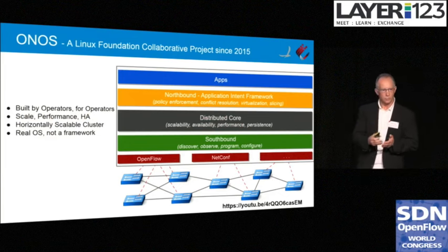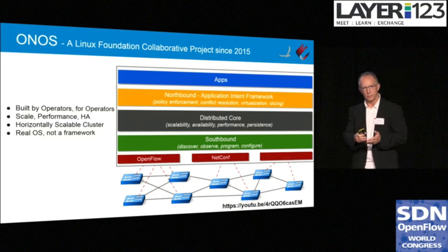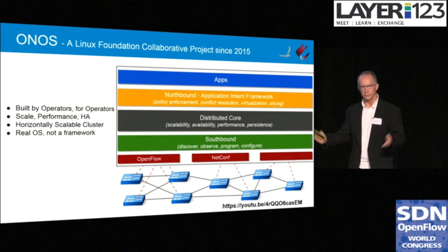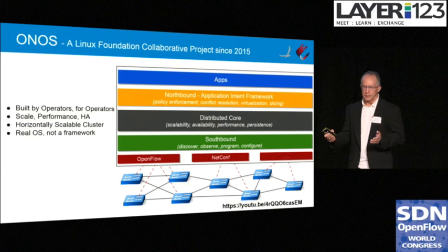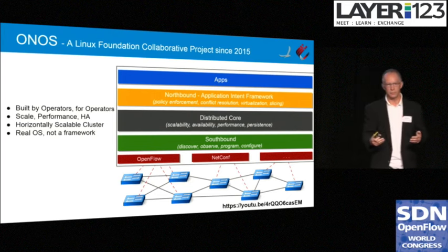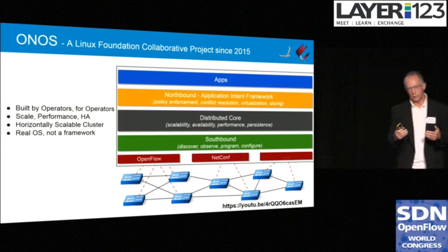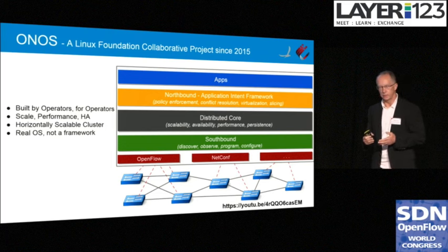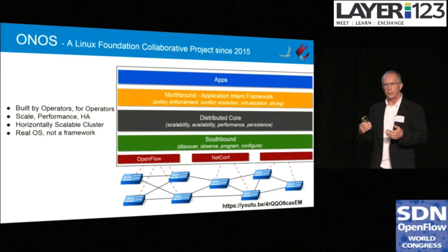ONOS achieves HA, scale, and performance by running as a clustered system, so you can run three, five, or seven servers and they all work together in a cluster. They shard the network so that you can very easily scale to the number of devices in your network. It's a real operating system — it provides real services. It has very strong layering and a set of abstractions to simplify how you write applications at the northbound.